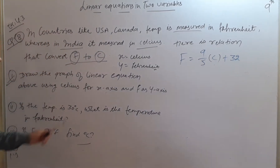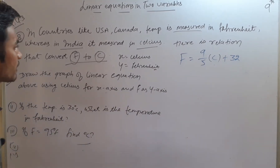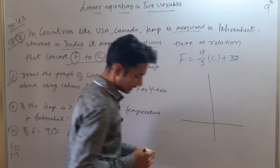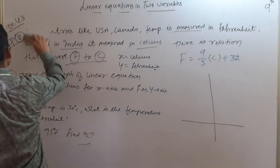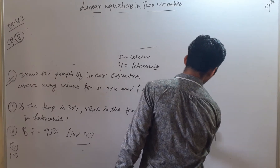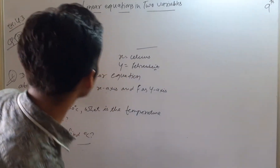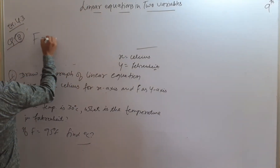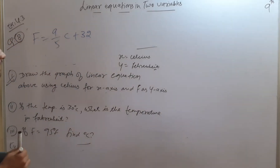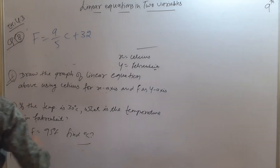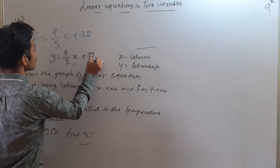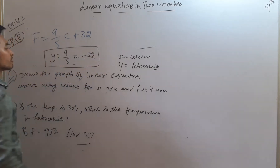Now this is our graph — the first part. We had the relation F = 9/5 C + 32. Replacing F with Y and C with X, we get the linear equation in two variables: Y = 9/5 X + 32.